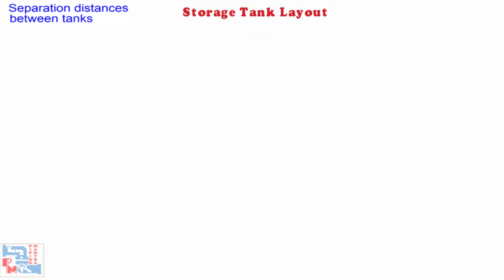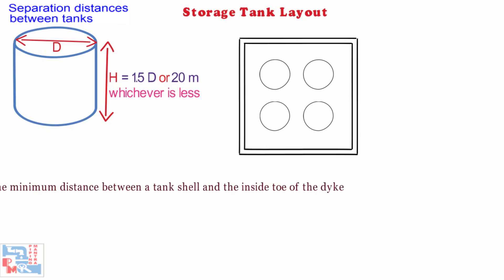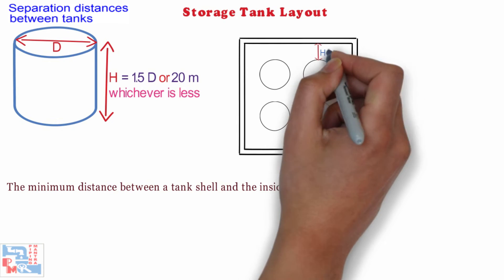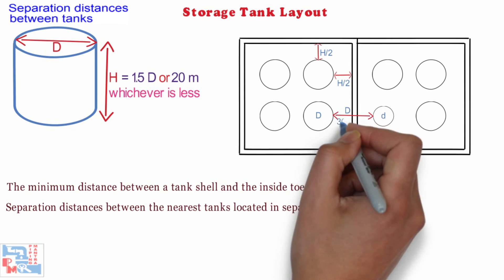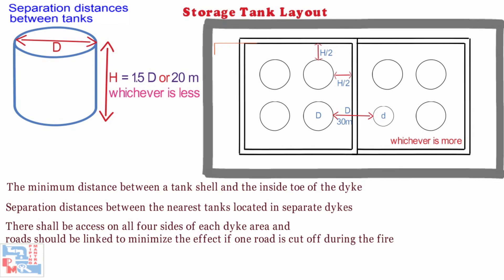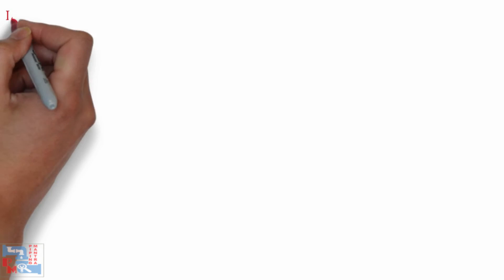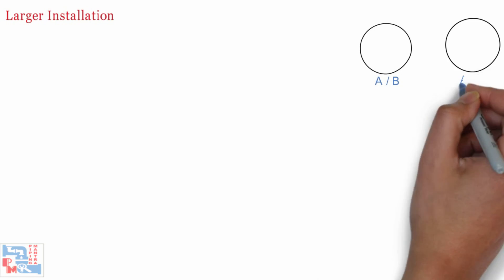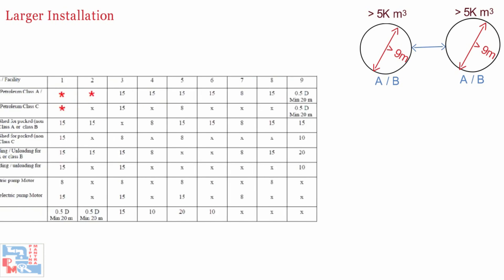Now let's talk about separation distances between tanks. The tank height shall not exceed one and a half times the diameter of the tank or 20 meters, whichever is less. The minimum distance between the tank shell and the inside toe of the dike wall shall not be less than half the height of the tank. Separation distances between the nearest tanks located in separate dikes shall not be less than the diameter of the larger of the two tanks or 30 meters, whichever is more. There shall be access on all four sides of each dike area and roads should be linked to minimize the effect if one road is cut off during fire. For larger installations where total storage capacity for Class A and B petroleum is more than 5,000 cubic meters or the tank diameter exceeds 9 meters, minimum separation distances shall be specified in the relevant tables.